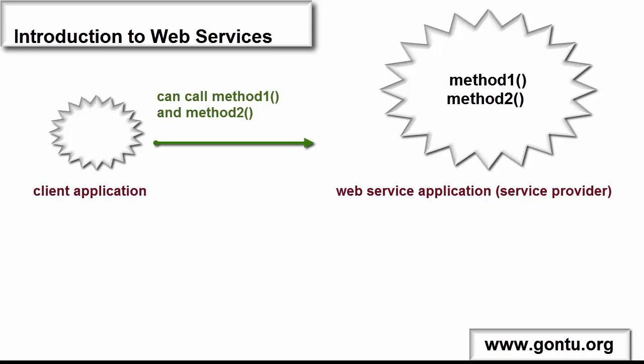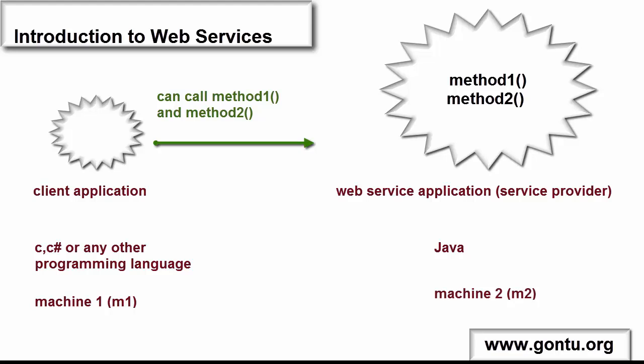An important point to note is that the client and service provider may or may not be developed using the same programming language. It may happen that a service provider is developed using Java and its client is developed using C, C#, or any other programming language. Also, client and service provider may or may not be present on the same machine. If both are on different machines, there has to be some network connecting them — for example, a LAN, a WAN, or the internet.